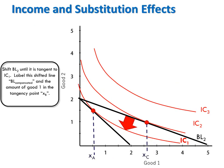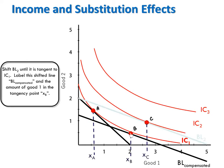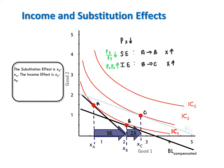To draw the compensated budget line, put a straight edge on budget line 2 and shift it inward until it's just tangent to IC1. Label this new point of tangency as bundle B. With bundle B now added to the graph, we can decompose the total effect of the reduction in the price of x.